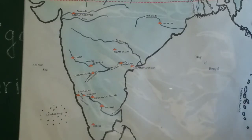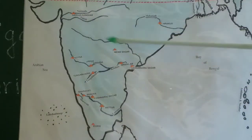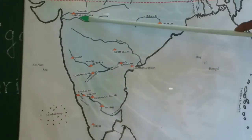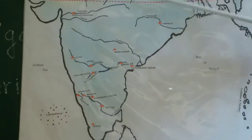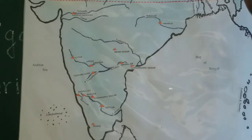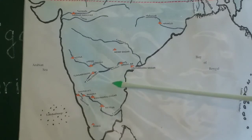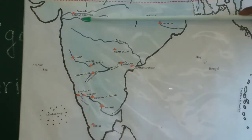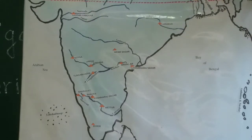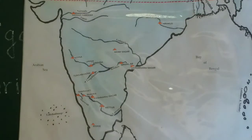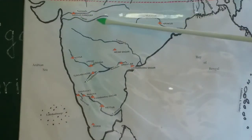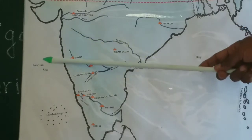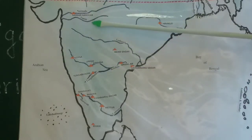If you say Deccan Plateau, you leave out Mahanadi and say Godavari, Krishna, Kaveri. If you say Peninsular Plateau, Mahanadi too can be included, because the Peninsular Plateau spreads to a larger area than the Deccan Plateau. Now let us look into the west-flowing rivers — the two rivers which run parallel to each other, moving towards west and joining the Arabian Sea.